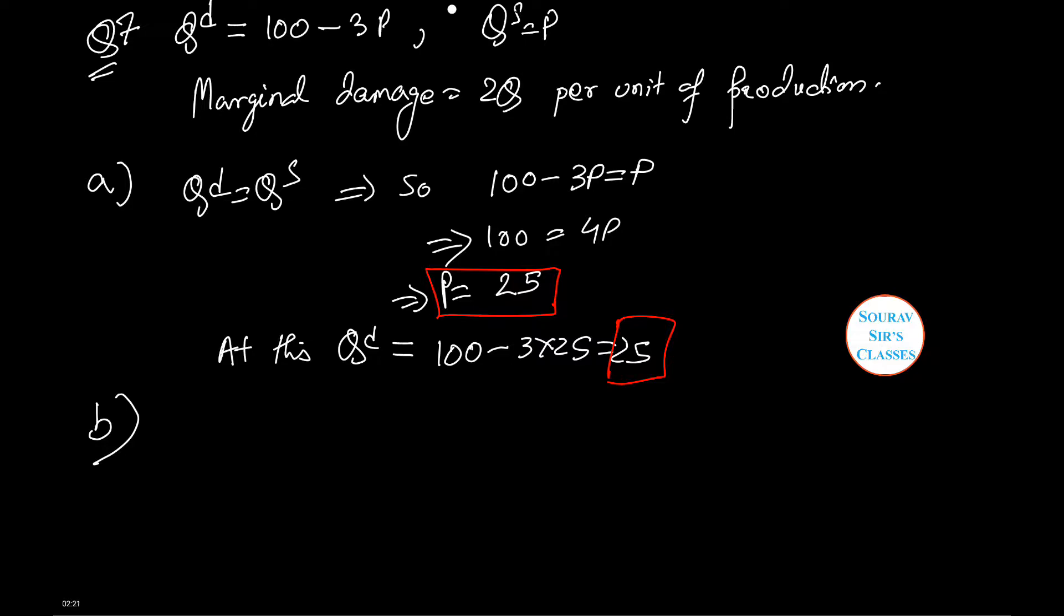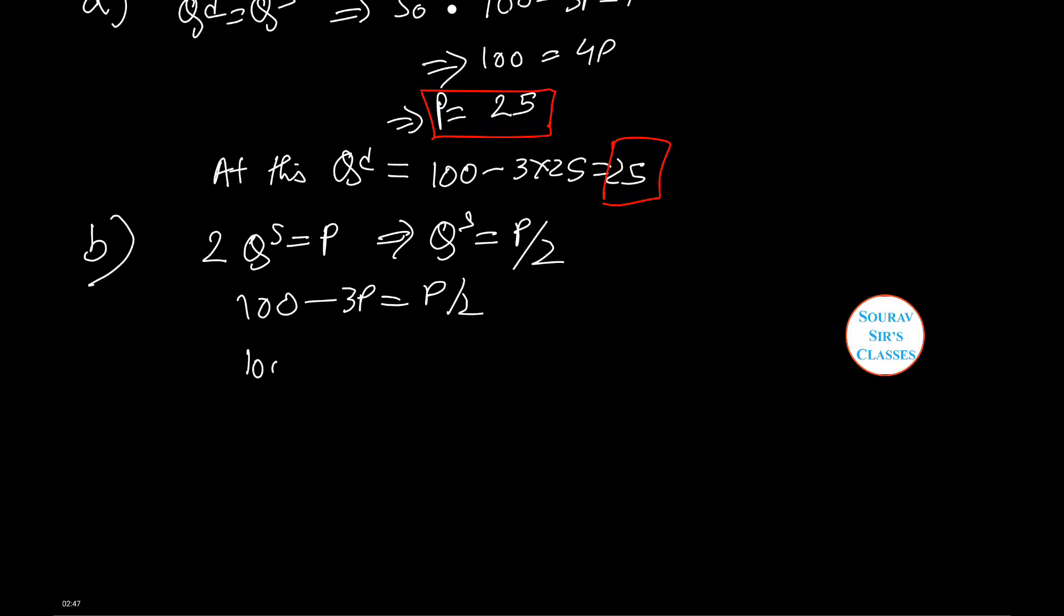Now, with government intervention, the supply function will be changed. 2QS equals P, or quantity supplied equals P by 2. Now, for social optimality, we set quantity demanded equal to supply: 100 minus 3P equals P by 2, or 100 equals 3.5P, or P equals 28.57. And thus, the quantity will also be 40.29.